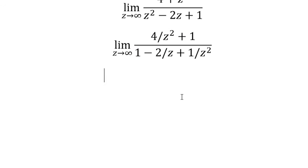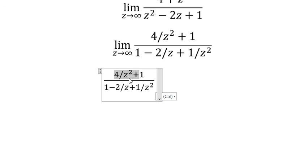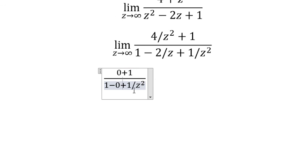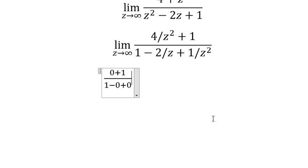The z squared terms cancel and the remaining terms go to zero, so we have one over one, and we get the final answer of 1. That's the end — thank you for watching!